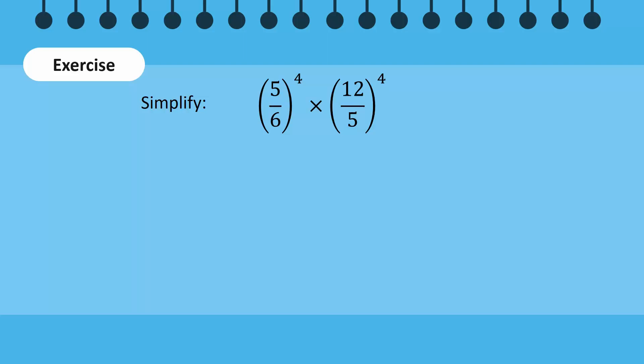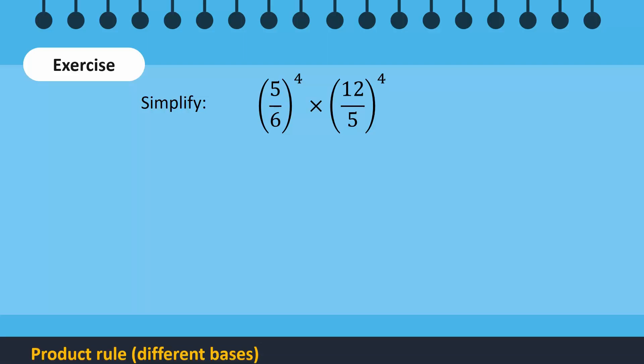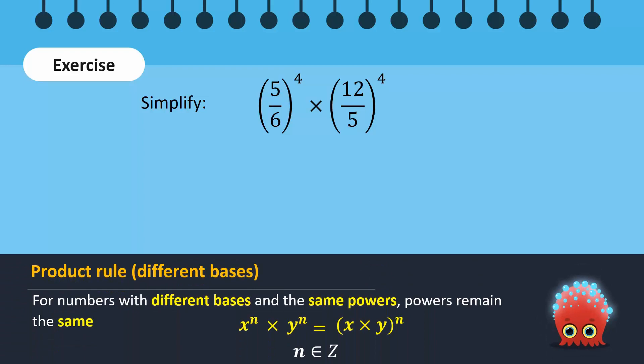Notice that both numbers have the same powers. Exponents product rule tells us that when numbers have different bases but the same powers, the bases are multiplied, while the power remains the same.